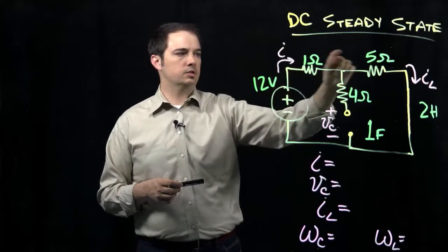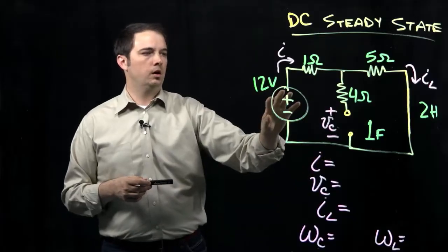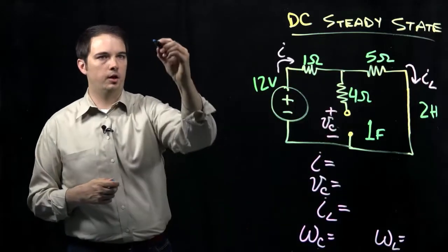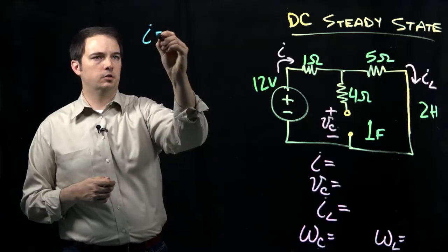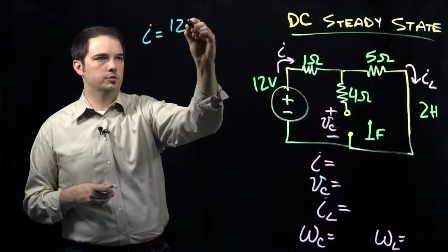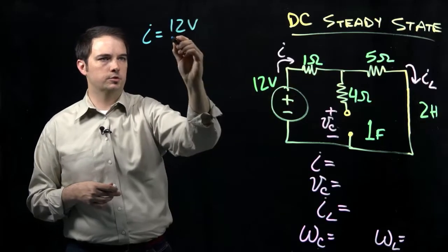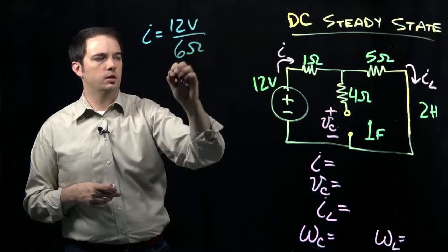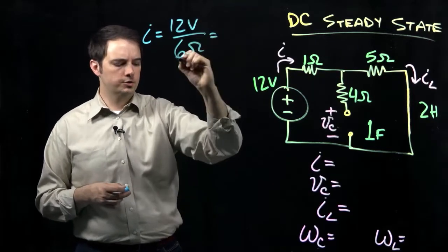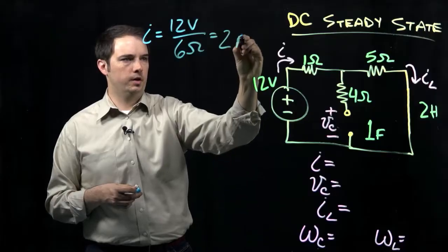So here we just have basically a single loop of current flow through the 1-ohm and the 5-ohm resistor, so we can just apply Ohm's Law to calculate what our current I would be, where this would simply be 12 volts is the total voltage drop across the two resistors, and this is a total of 6 ohms, where I'm simply adding the 1 and the 5-ohm resistor here to give me a current flow of 2 amps.